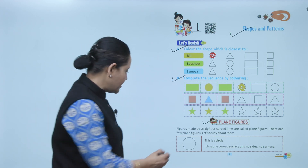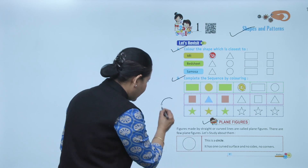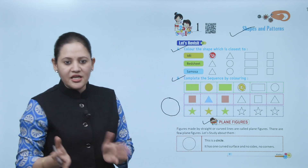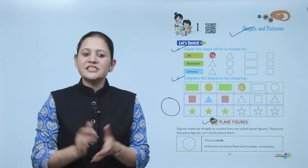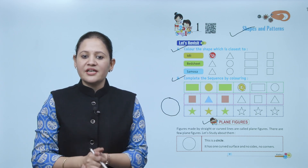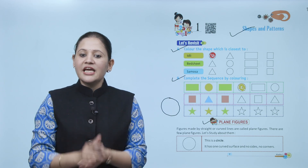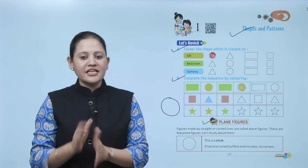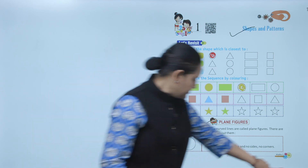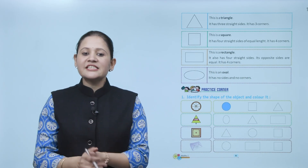First is a circle. It's a circle — like your bangle, coin, chapati — that is of circle shape. A circle has one curved surface and no sides and no corners. In a circle there are no sides and no corners.